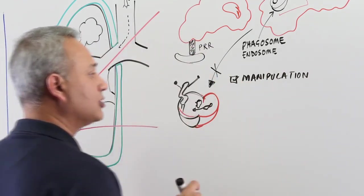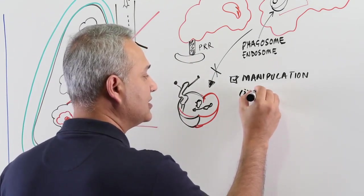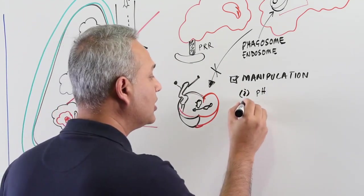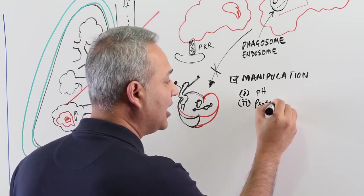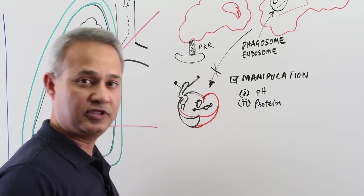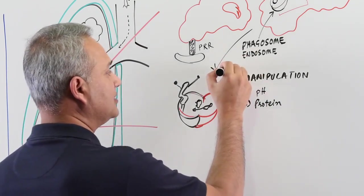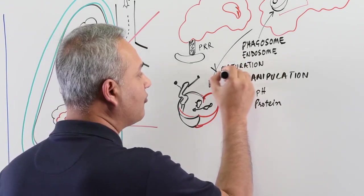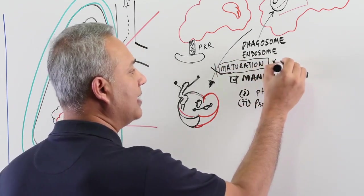A step called manipulation by the mycobacterium tuberculosis. What does mycobacterium tuberculosis do? Number one, it causes the pH manipulation in the phagosome. Number two, it inhibits various protein activations which allow the phagosome and lysosome to connect with each other. The end result is maturity. This is called maturation. Maturation of phagolysosome does not happen.